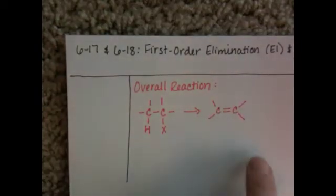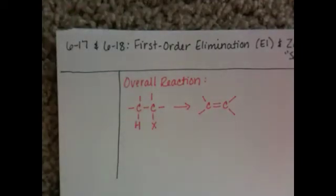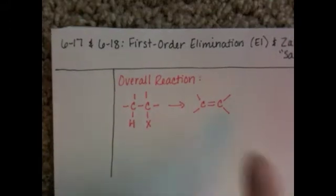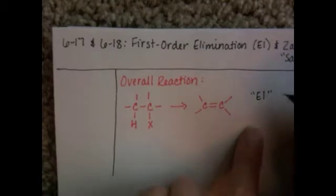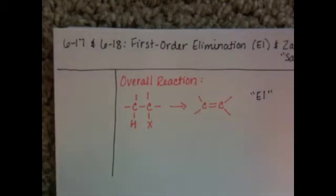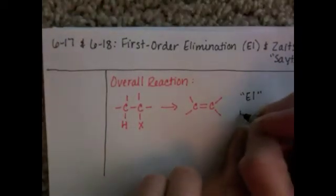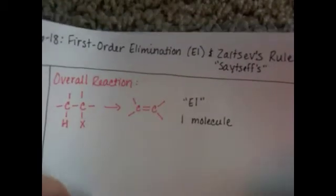We are going to study this reaction in terms of its mechanism in Chapter 6, but in Chapters 7 and 8, when we focus on alkenes, we're going to revisit E1 with a whole lot more detail. This is called E1, first order elimination, and just like SN1, it is very similar to that process — it's one molecule falling apart in the slow step.